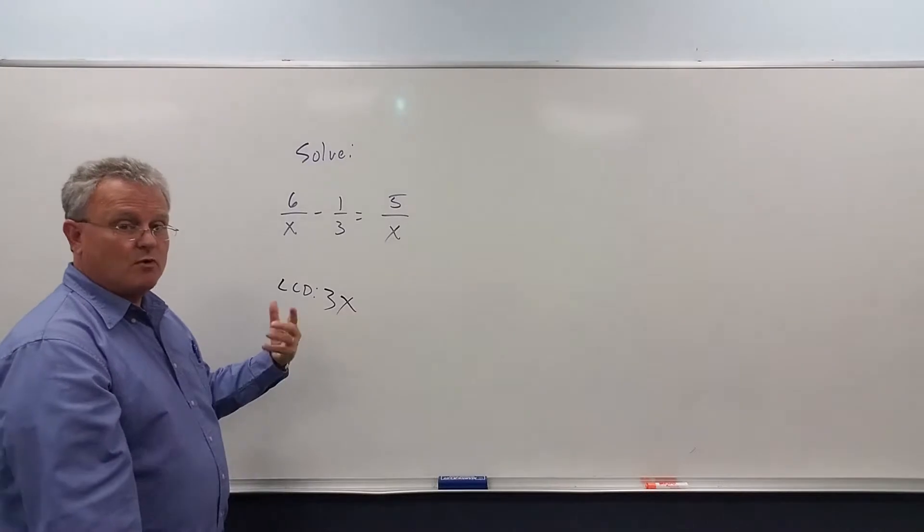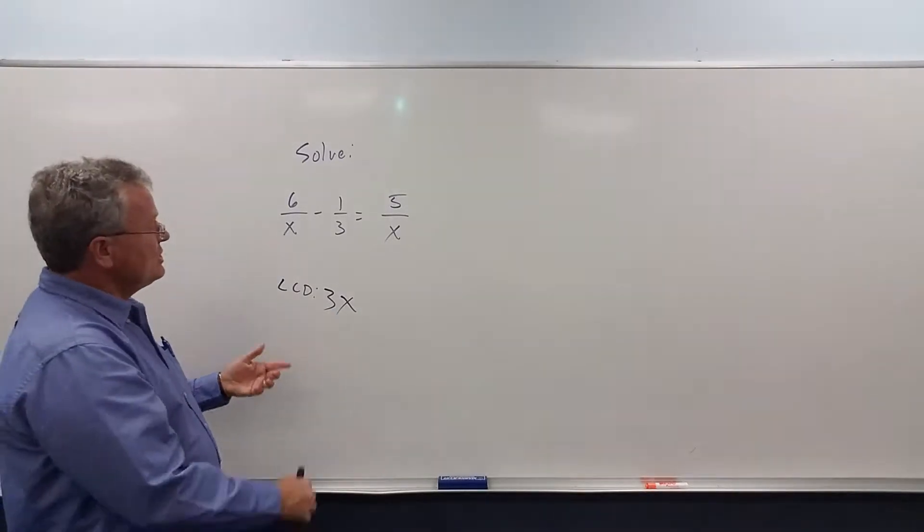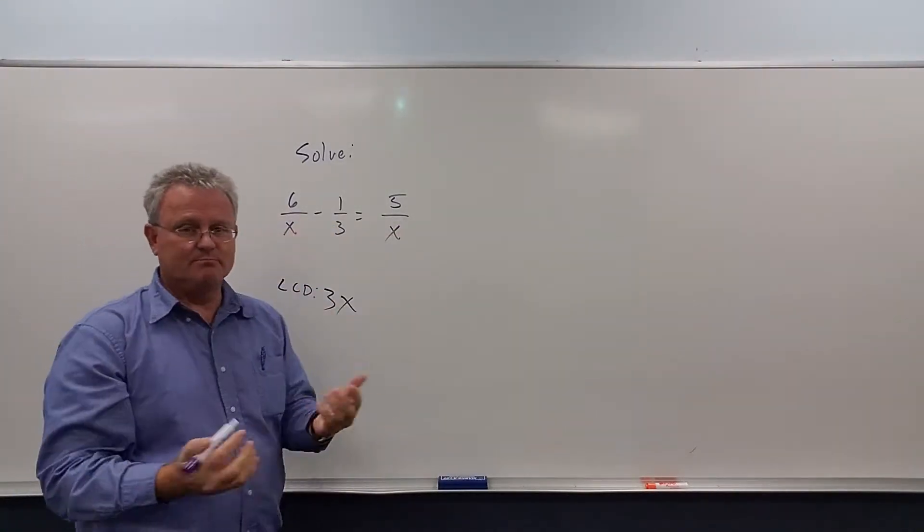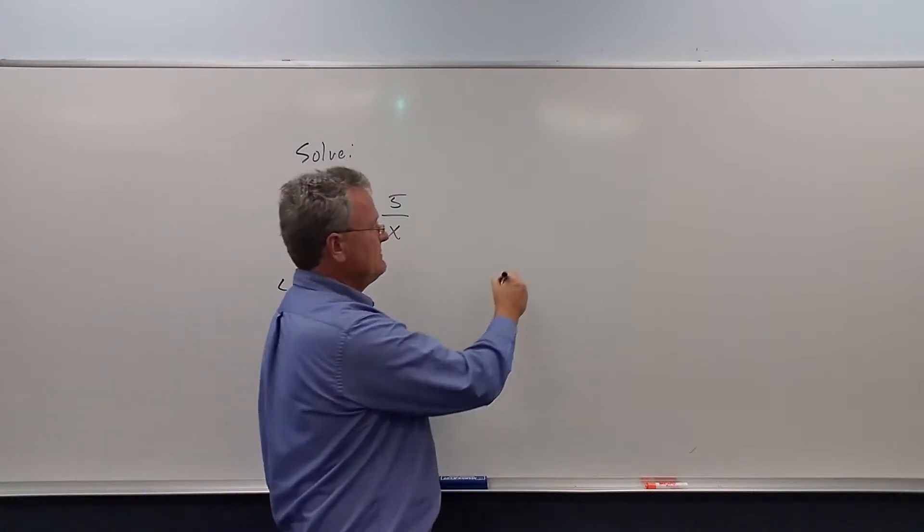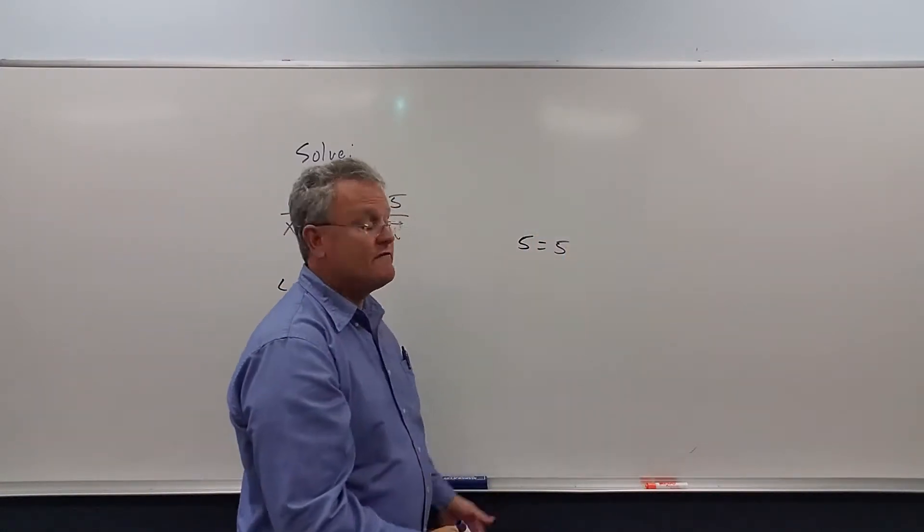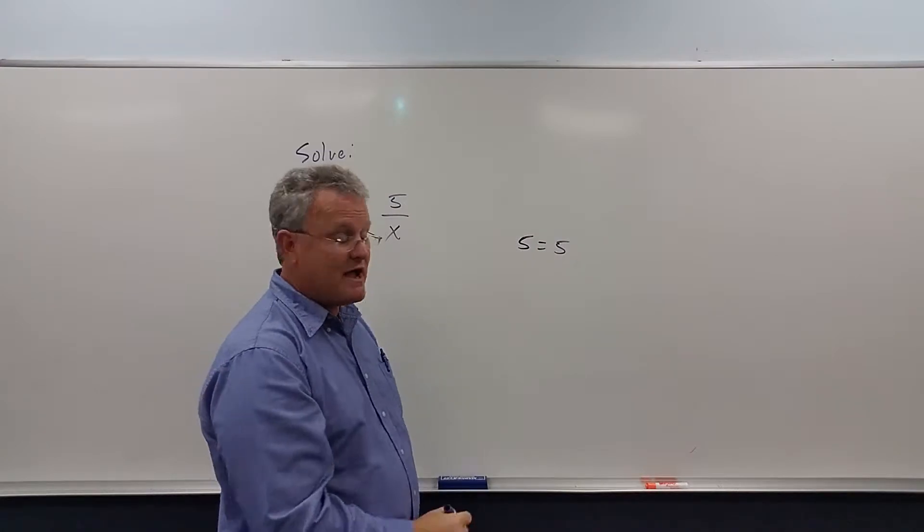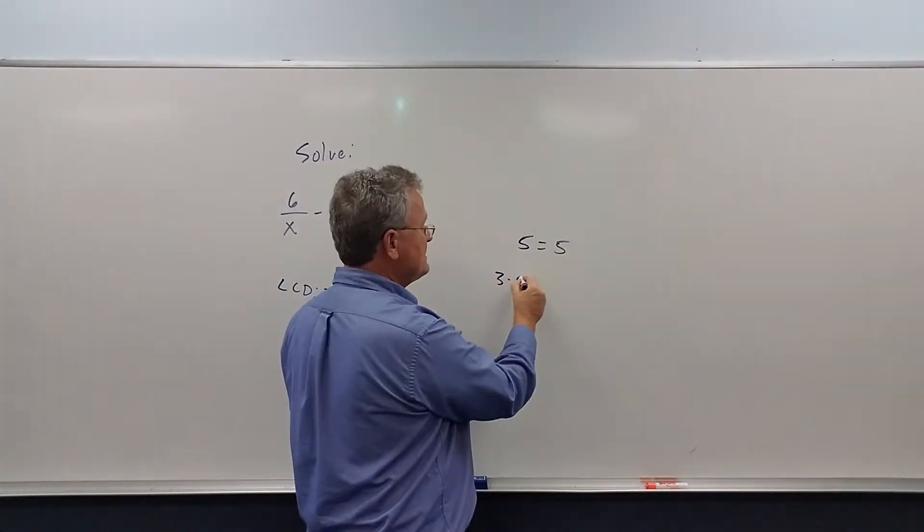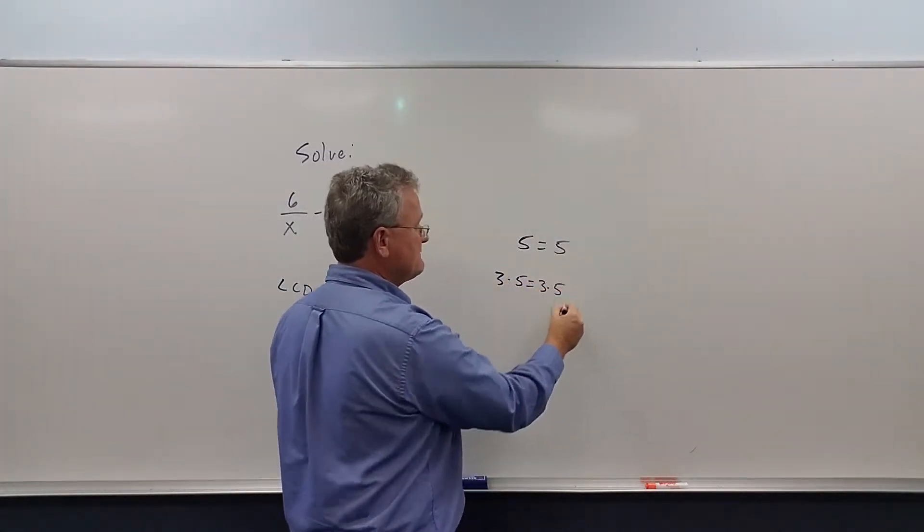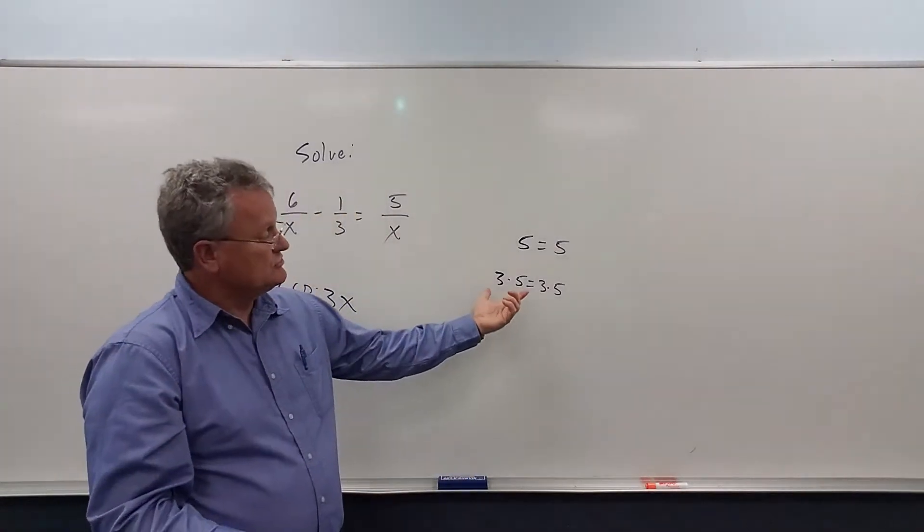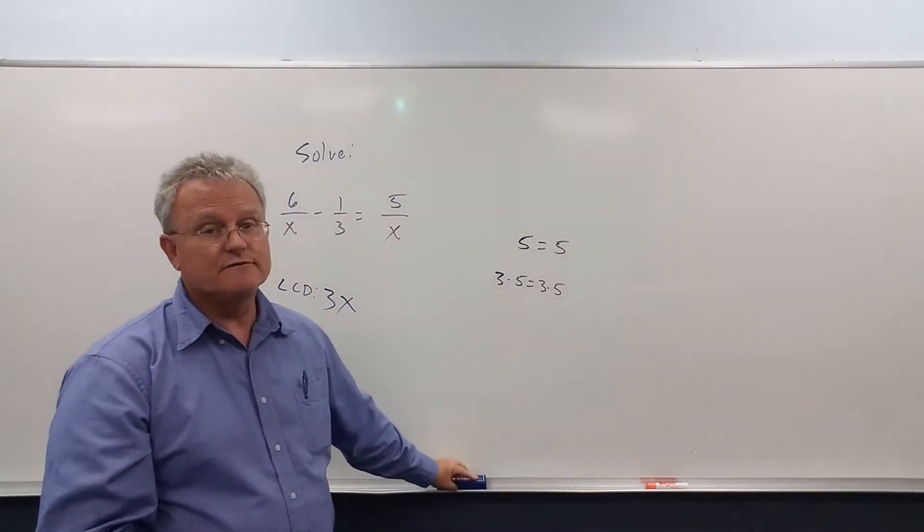What do we do with this? Well remember with an equation, you can do anything to both sides, and it's still going to be true. If 5 equals 5, well if I multiply both sides by 3, we get 3 times 5 equals 3 times 5. It's still a true statement, 15 equals 15.